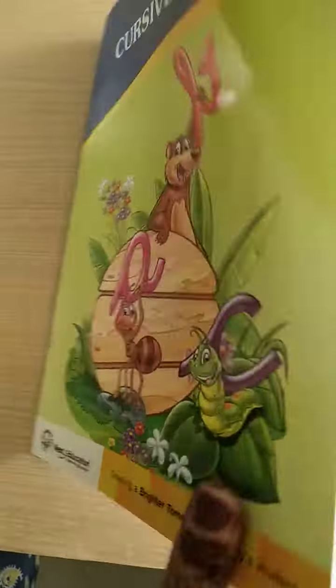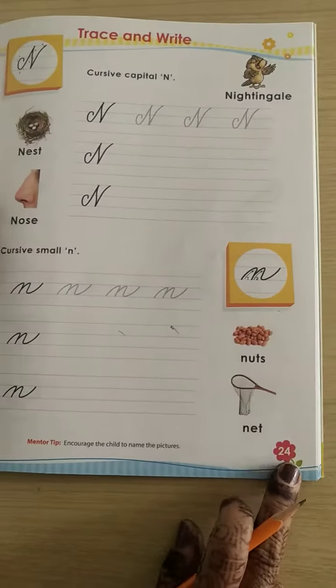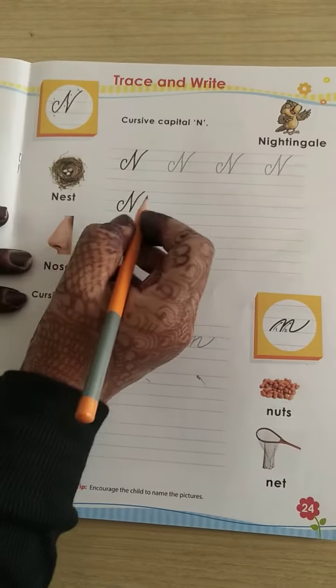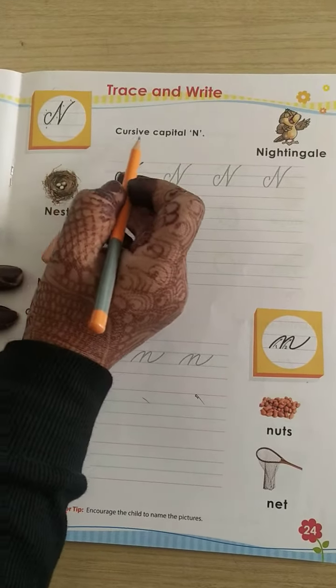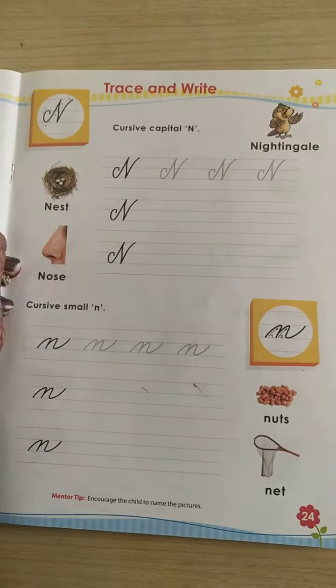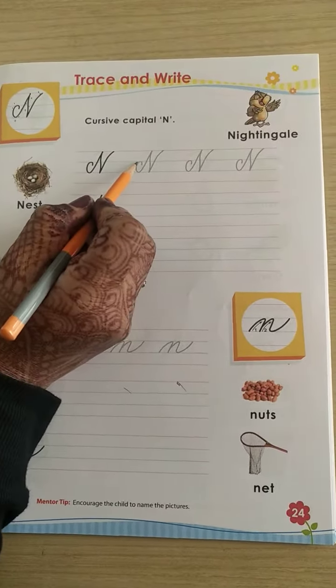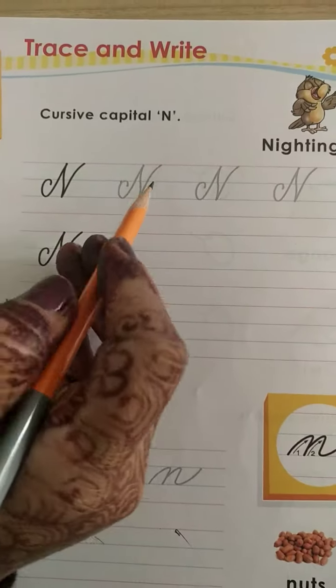Let's check out your cursive writing book, page number 24 for today's date. Today we are going to learn cursive capital N, so let's start tracing first. You have to start from this second line.